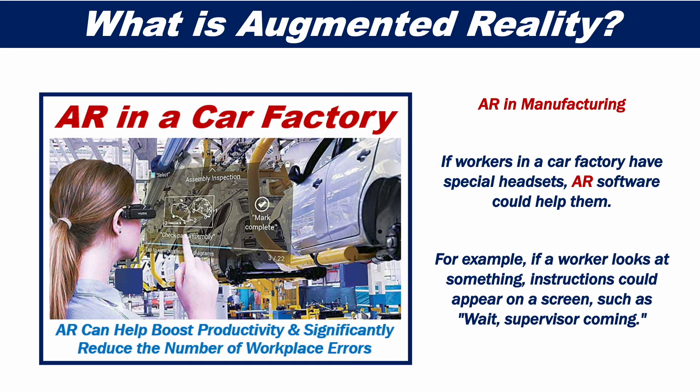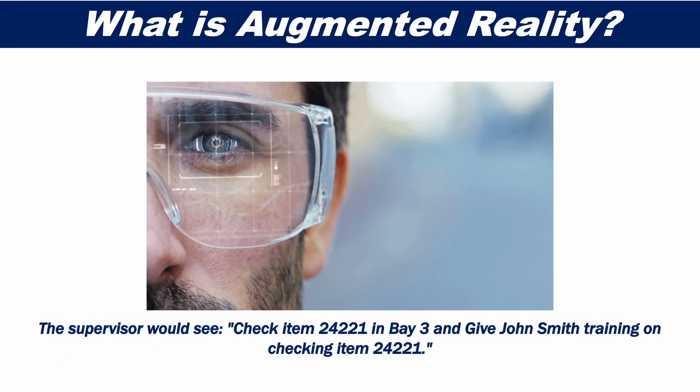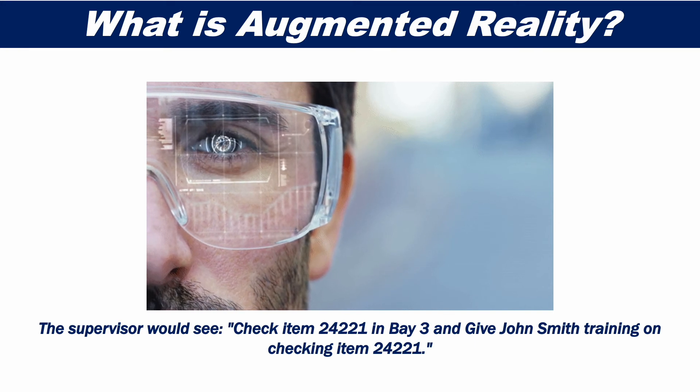AR in manufacturing. If workers in a factory wear AR headsets, the software can help them. When a worker looks at something, instructions could appear on a screen in front of them, such as 'wait, supervisor coming.' The supervisor can then see an alert to check an item in a specific location and then read instructions on what to do next.